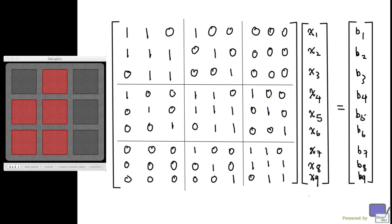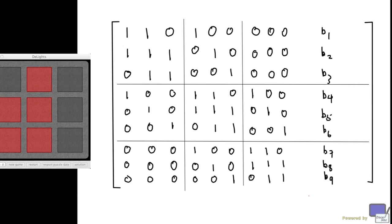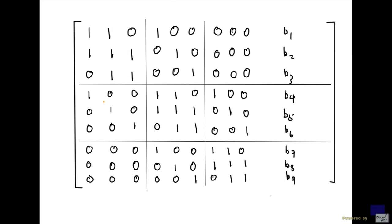You might find that after watching this video, all the fun of playing this game will have been taken away. So I'm going to form the augmented matrix. I've left some extra space on the rightmost column because this column is going to get big. What we're going to do is add row 1 to row 2 — row 2 is replaced with row 2 plus row 1. Remember that this system is over GF(2), so 1 plus 1 is 0.